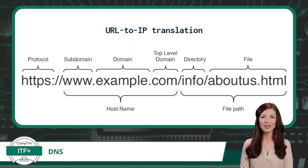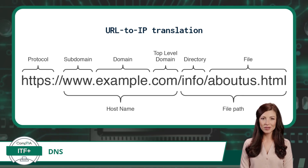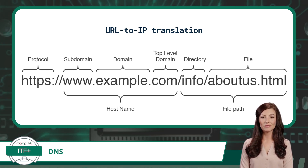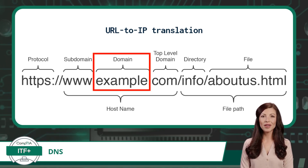Now that we know how the DNS lookup process works, let's take another look at the URL — which part of the URL correlated to the location where the IP address was actually stored? That's right: the domain 'example' was the portion of the URL that led us to the domain name server where the IP address information, or record, was stored.